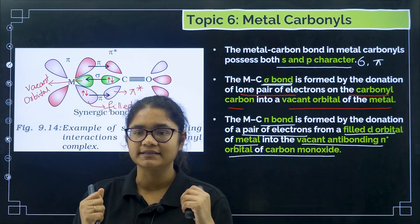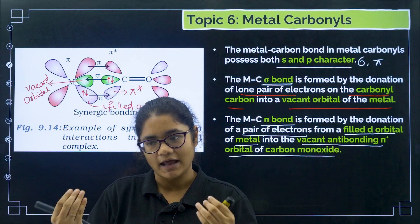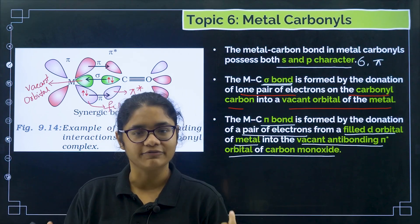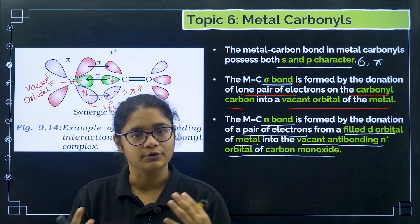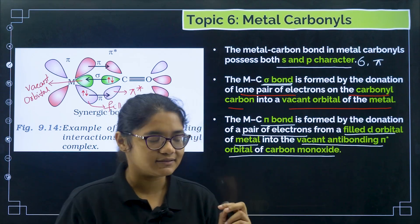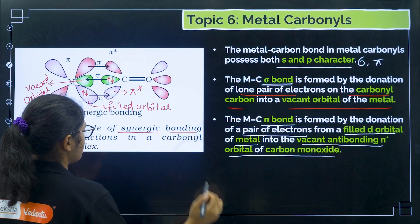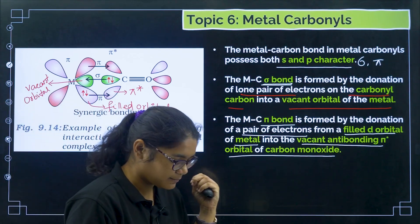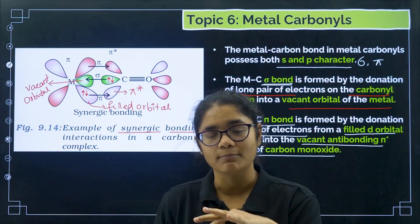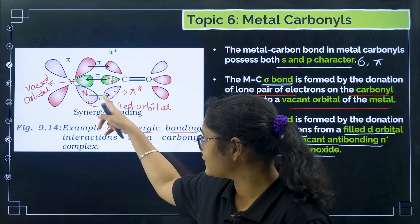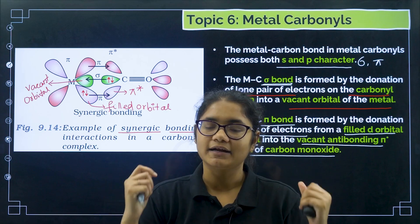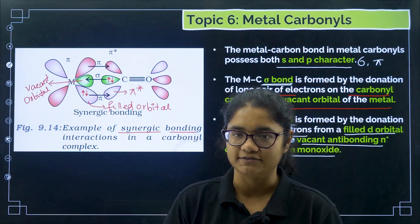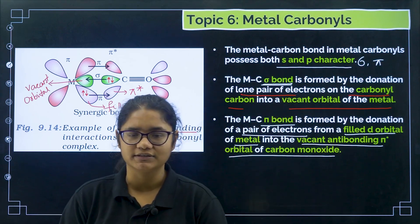Both the metal and carbonyl are helping each other — both are donating electrons to each other. That is why this is called synergic bonding or the synergic effect. This makes metal carbonyl complexes special compared to other compounds because of the formation of this extra pi bond, resulting in very strong complexes.